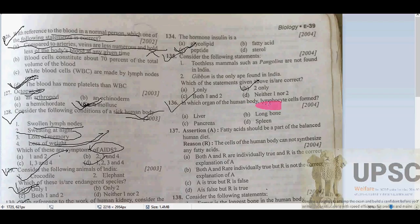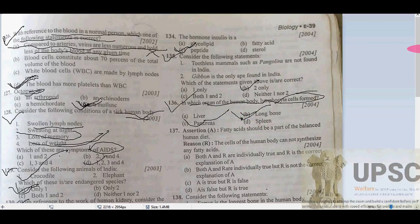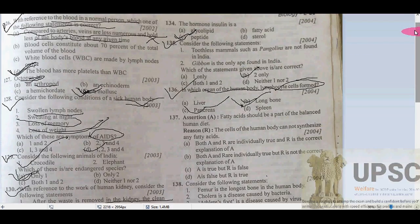Question 136: which organ of the human body produces lymphocytes? Options include long bone, spleen, liver, and pancreas. The answer is B — long bone — because lymphocytes are a type of WBC blood cells, found in two types: B cells and T cells. B cells provide the mechanism of antibody production to fight foreign particles.